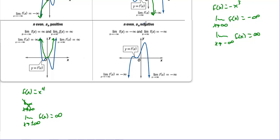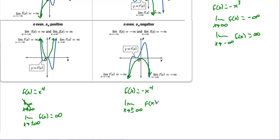If the coefficient is negative but the degree is even — like f(x) = −x⁴ — the graph opens downward on both ends. It may twist and turn in the middle, but the limit as x → ±∞ of f(x) equals negative infinity in this case.